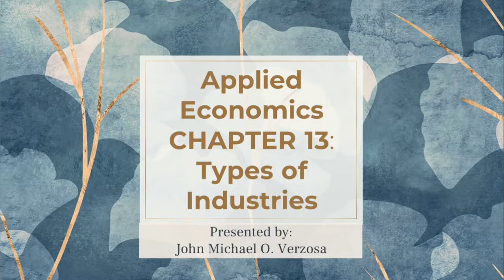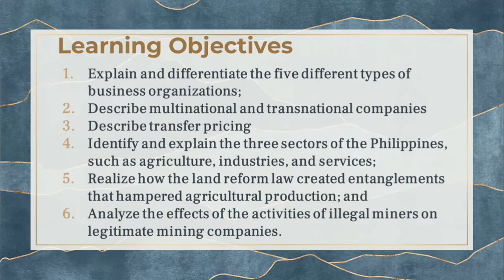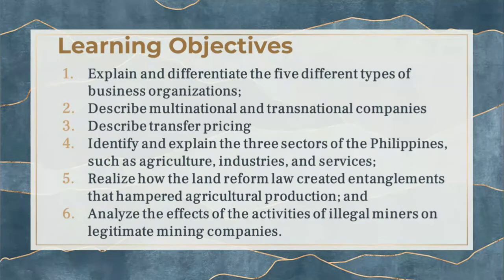Today's topic is Chapter 13: Types of Industries. Here are our learning objectives: explain and differentiate the five different types of business organization; describe multinational and transnational companies; describe transfer pricing; identify and explain the three sectors of the Philippines — agriculture, industries, and services; realize how land reform law created entanglements that hamper industrial production; and analyze the effects of illegal miners on legitimate mining companies.